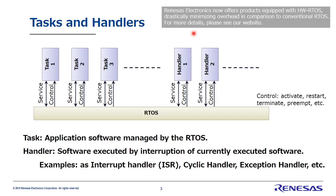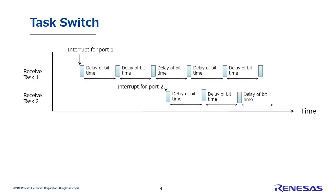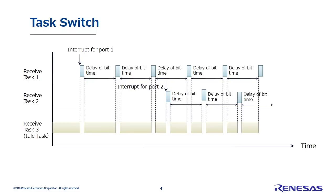RTOS also manages software called handlers, but we'll explain that in more detail later. This is how the RTOS switches between receive task 1 and receive task 2, managing them both. What does it do while these two receive tasks are idle? During these times, receive task 3 becomes active. The RTOS activates or reactivates tasks as needed, and when those tasks go to waiting or terminate, it switches to other tasks.